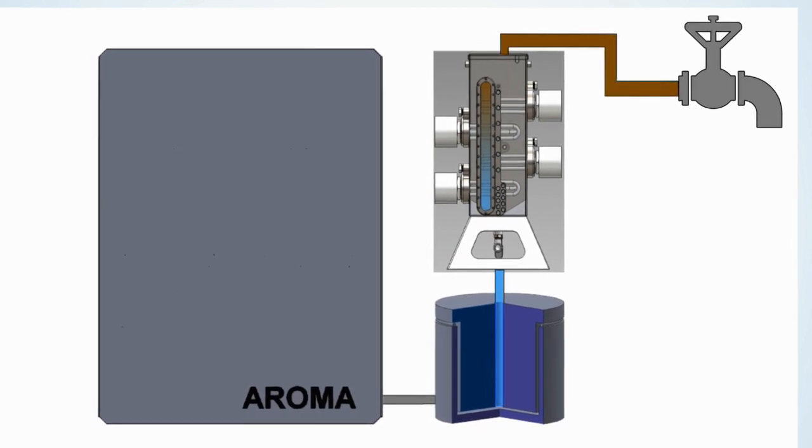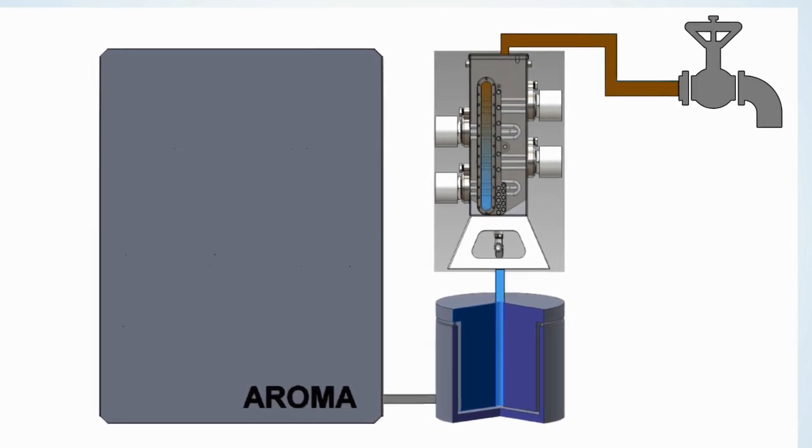Once the water cut is isolated, the tracer chemicals are extracted from the water using a specially developed thin film. After extraction, the film is heated to high temperatures releasing the tracer chemicals as vapors that are passed directly to the Aroma Sensor. This process eliminates the chemical preparation steps required during manual sampling.